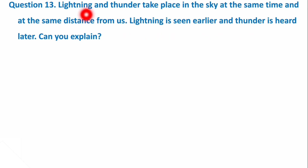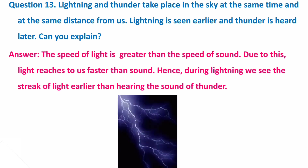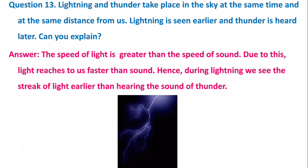Next question: Lightning and thunder take place at the same time and the same distance from us, yet lightning is seen earlier and thunder is heard later. The reason is that the speed of light is greater than the speed of sound, so light reaches us faster. Hence we see the lightning before we hear the thunder.